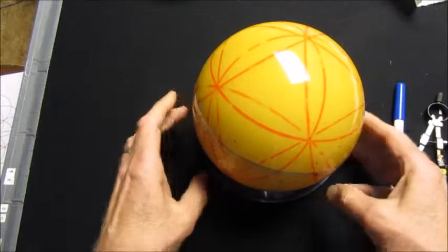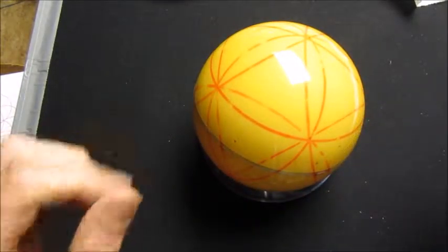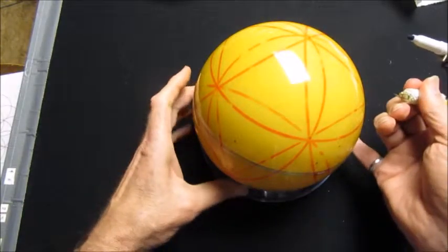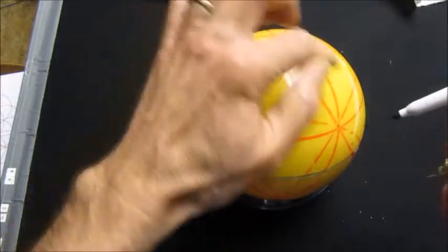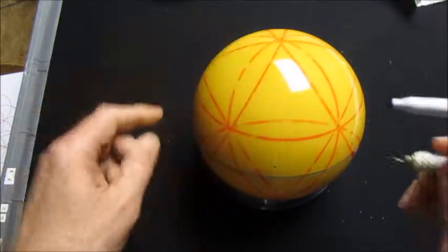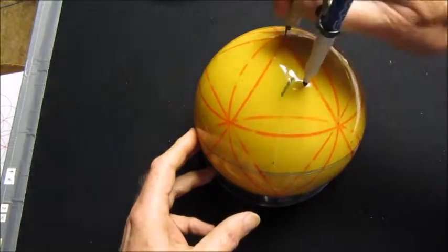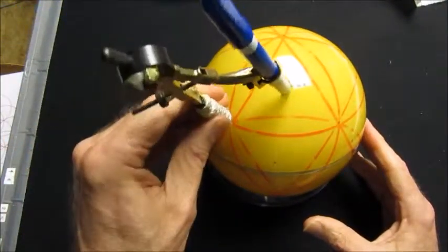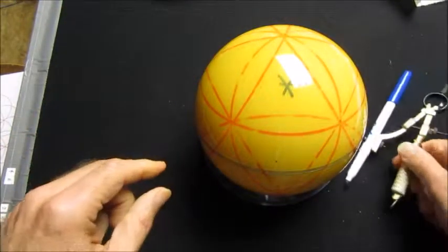Now that we have the icosahedron defined, we can also now find the dodecahedron and find the vertices of the dodecahedron by just triangulating between the vertices of the icosahedron and finding the center of this triangular face. That would be now the center of one of those faces. I'll continue to do the rest of them.